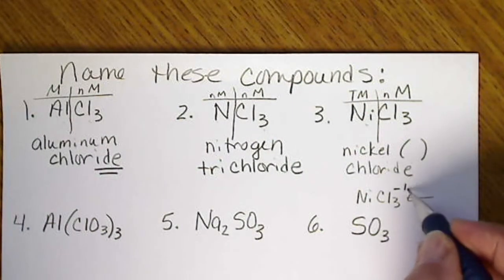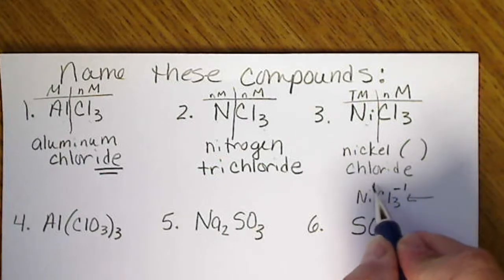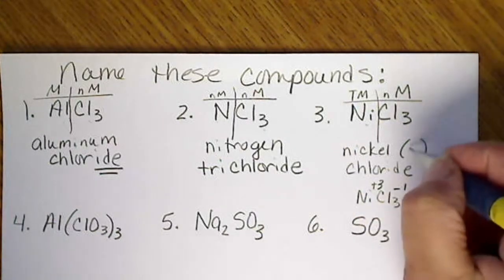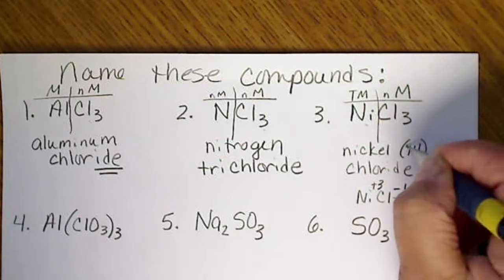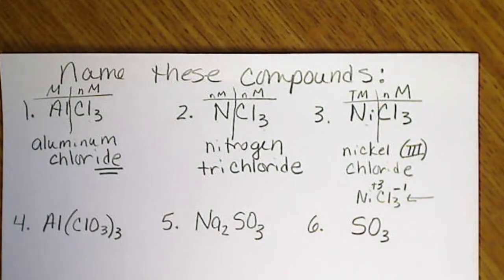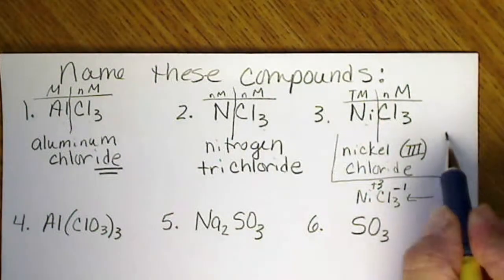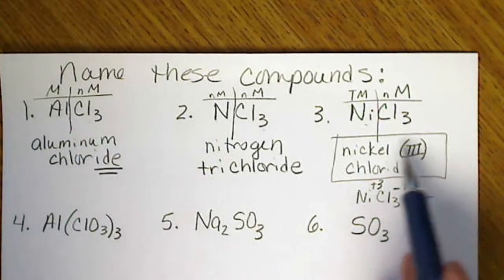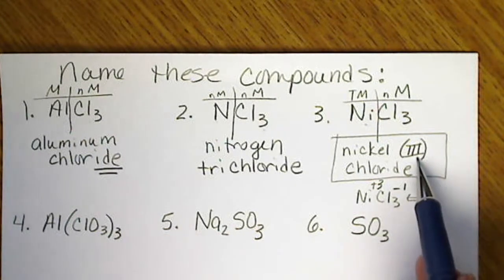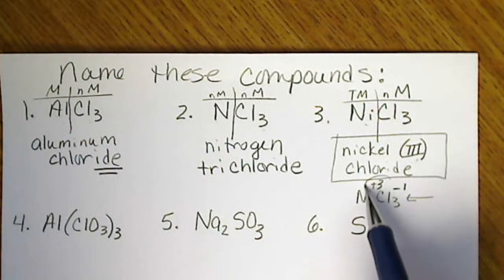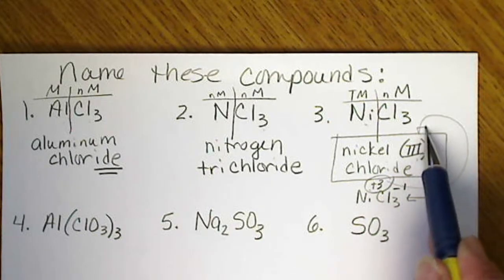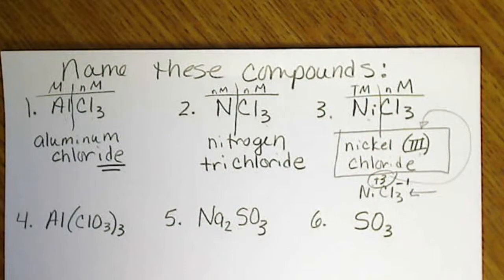If we have three negative ones, this nickel must be a positive three. So this is nickel(III) chloride. The name of the compound needs the charge, and we have to figure out what the charge is to put that in as a Roman numeral.